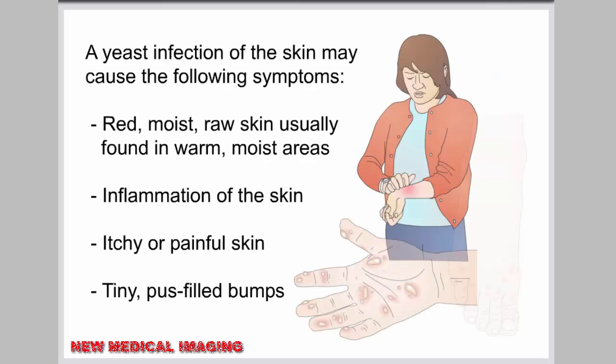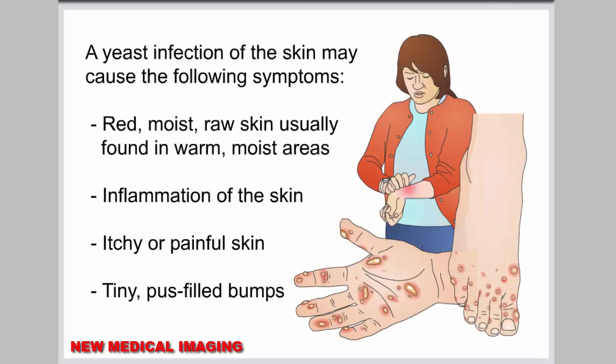A yeast infection of the skin may cause the following symptoms: red, moist, raw skin, usually found in warm, moist areas; inflammation of the skin; itchy or painful skin; and tiny, pus-filled bumps.